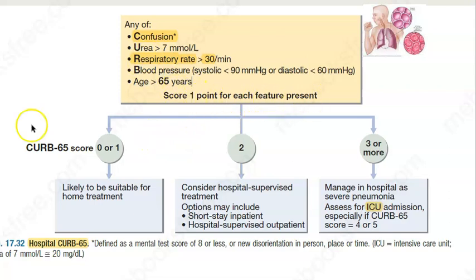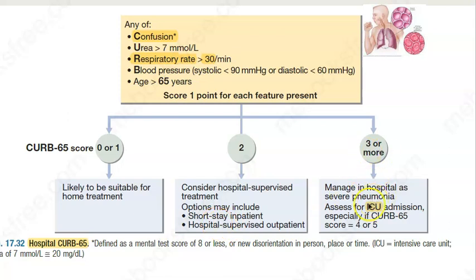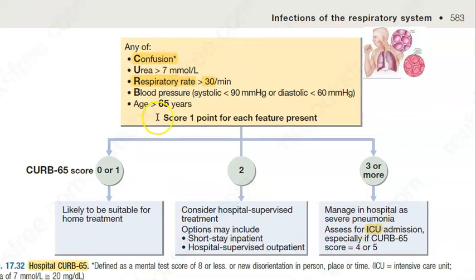Score one point for each feature. If the score is 0 to 1, you can give home treatment. If it is 2, you may have to hospitalize the person. If it is 3 or more, you have to manage in hospital as severe pneumonia. This is very different from the pediatric classification, where in children it goes: cough and cold, then pneumonia, then severe pneumonia, and then persistent pneumonia.